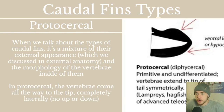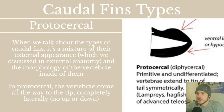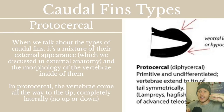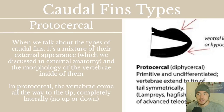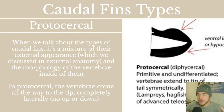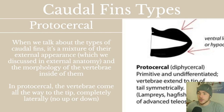The first type is protocercal, called primitive and undifferentiated. The vertebra comes all the way out to the tip, and it's completely lateral — the vertebra goes straight out to the tip in a straight line, not tipping up or down. This is the kind of thing you'll see in lampreys and hagfish. Interestingly, this type also shows up later in the evolutionary line in the larvae of some advanced teleosts — so the larvae of more advanced fish will have this type of tail when they're young.